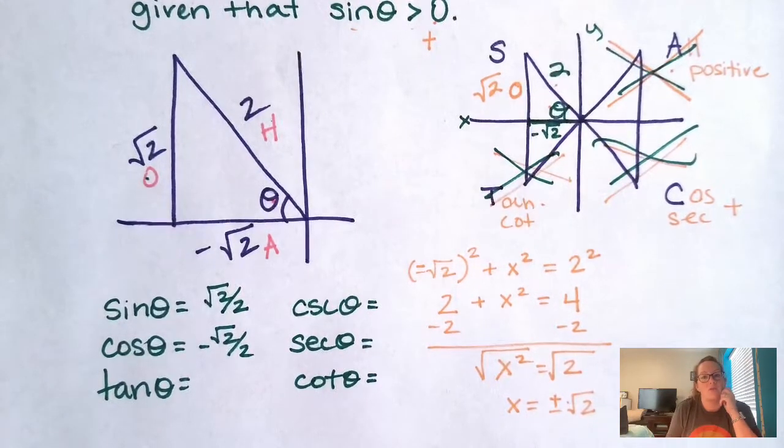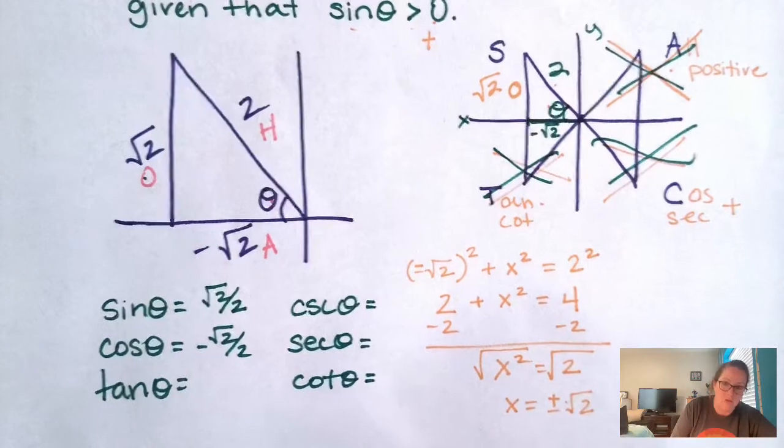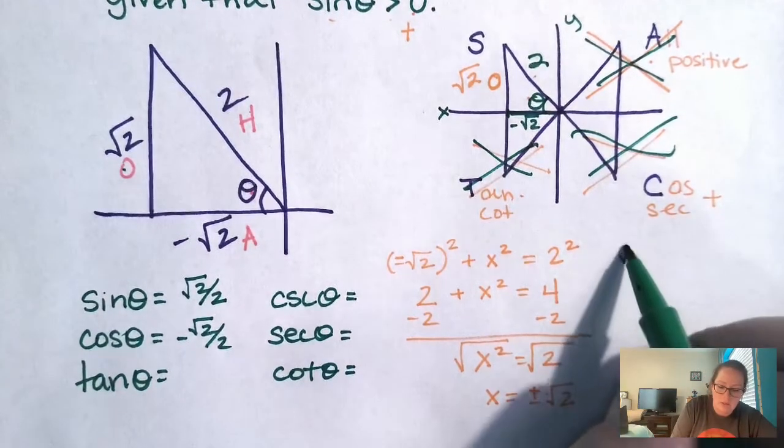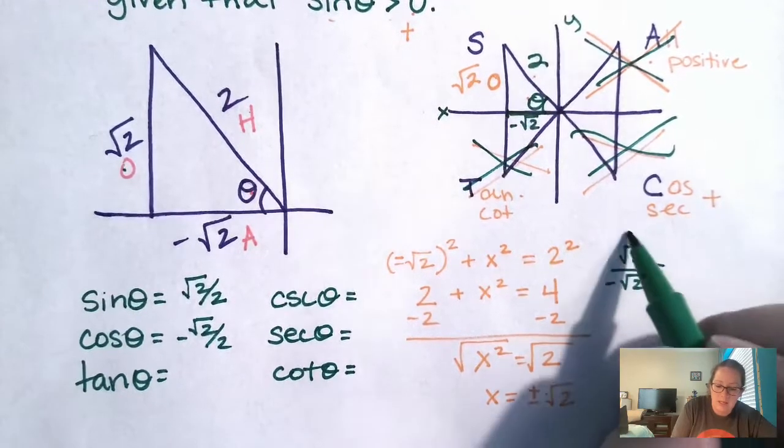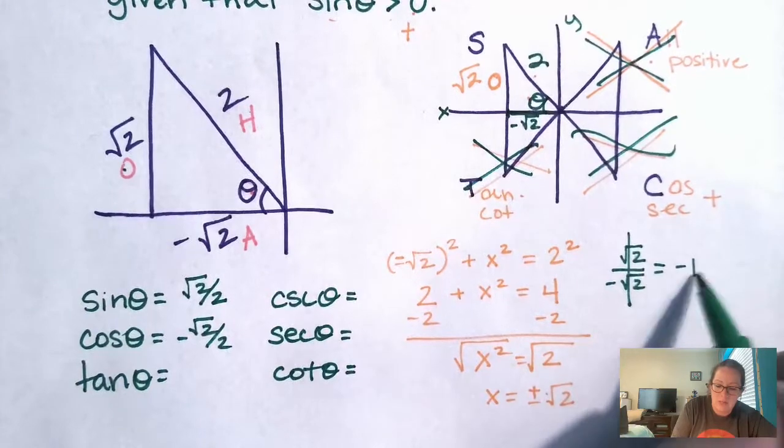Tangent is OA root two over negative root two. So you can come over here and just simplify that. Root two over negative root two. The same thing over the same thing cancels out. There's a negative, so it's just going to be negative one.